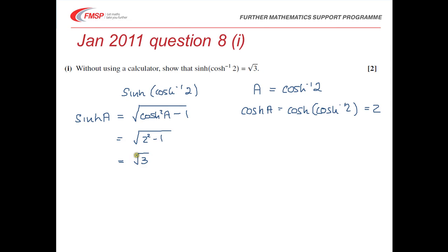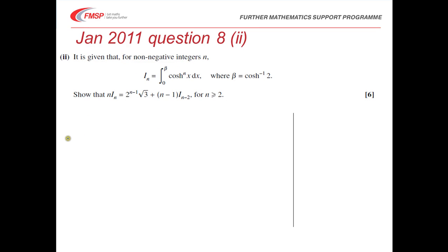That's two marks for part 1 — a method mark for using this hyperbolic identity, and an accuracy mark for substituting in cosh⁻¹(2). We'll be using that result in part 2, where I(n) is the integral from 0 to beta of cosh to the power of n of x.